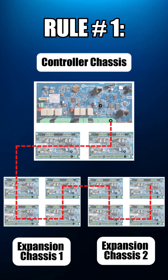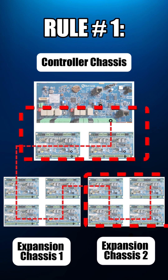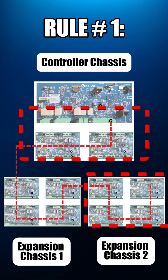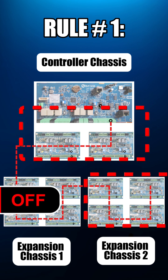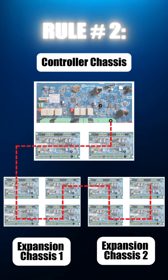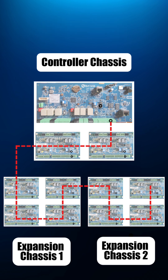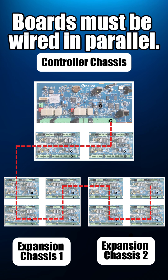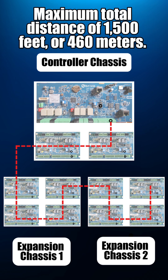Rule 1: Only enable termination switches at the first and last panels. All switches in the middle must stay off. Rule 2: Boards must be wired in parallel, with a maximum total distance of 1,500 feet or 460 meters.